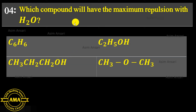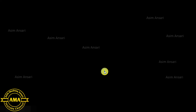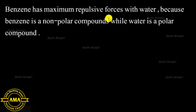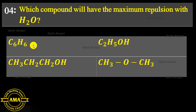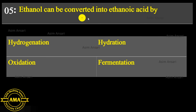Next MCQ: Which compound will have the maximum repulsion with water? Options: C6H6, C2H5OH, CH3CH2CH2OH, CH3OCH3. Benzene has maximum repulsive forces with water because benzene is a non-polar compound while water is a polar compound. The exact answer is C6H6, benzene.